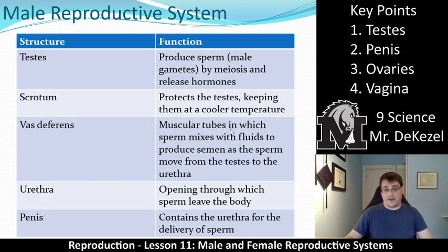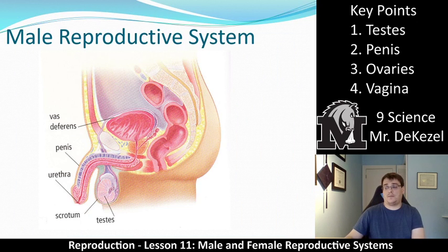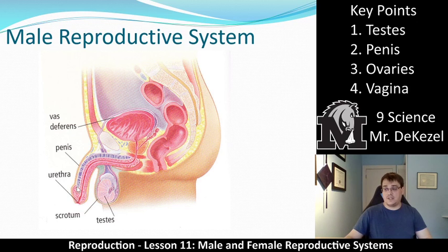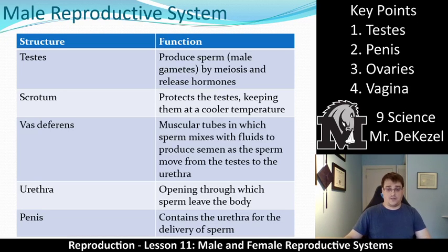It then travels after the vas deferens through a muscular tube in which the sperm mixes with fluids to produce semen as the sperm moves from the testes to the urethra. The urethra is the opening through which the sperm leaves the body. It is this tube that travels through the penis, coming from the bladder and also from the vas deferens. The penis contains the urethra and is used for the delivery of sperm.